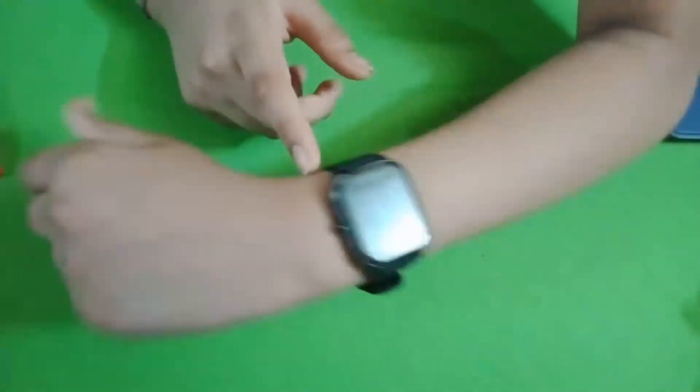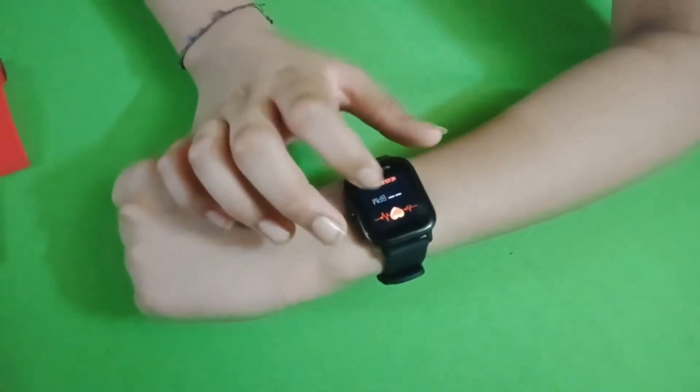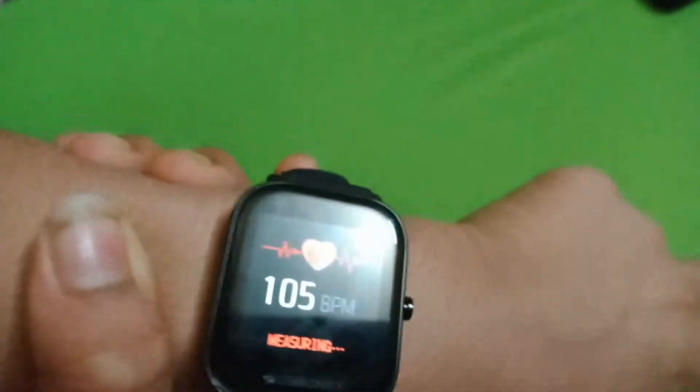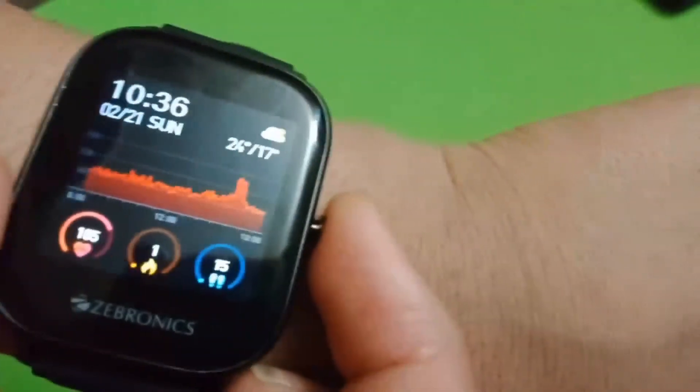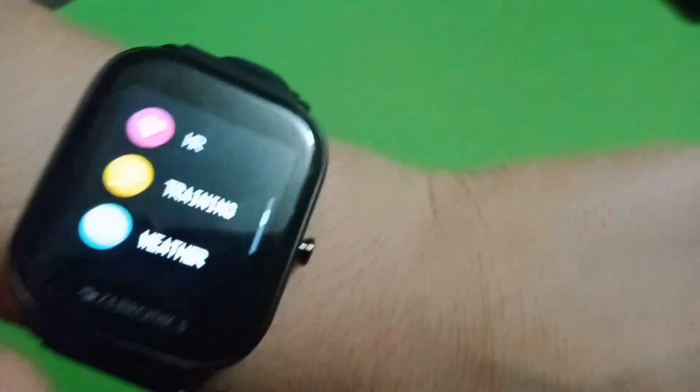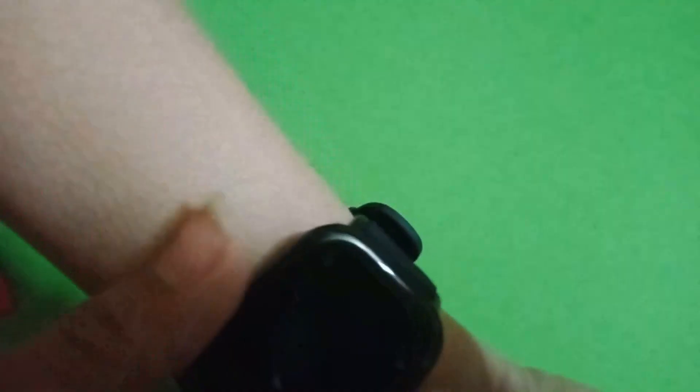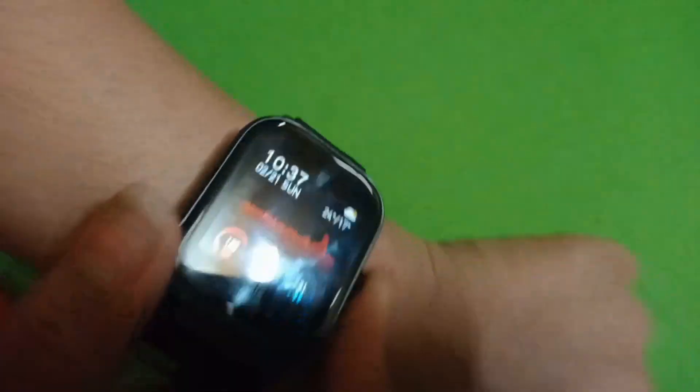So let's test out the accuracy of the watch. Let's start off with heart rate monitoring. It was very fast and very accurate. So let's test out the steps. As you guys can see I have 15 steps right now. And now I have 31 steps. The step counting is also very accurate. So guys, thank you for watching this video. Subscribe to the channel if you like.